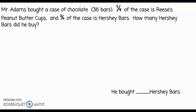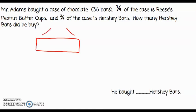Now we're going to apply the read, draw, write strategy. Let's read this problem together. Mr. Adams bought a case of chocolate that had 36 bars in it. One fourth of the case is Reese's peanut butter cups and three fourths of the case is Hershey bars. How many Hershey bars did he buy? Now that I've read the problem once for understanding, I'm going to re-read the problem and try to represent it using a tape diagram — a rectangular model used to help visually represent numbers. In this case, I'm going to be representing my 36 candy bars using the tape diagram.